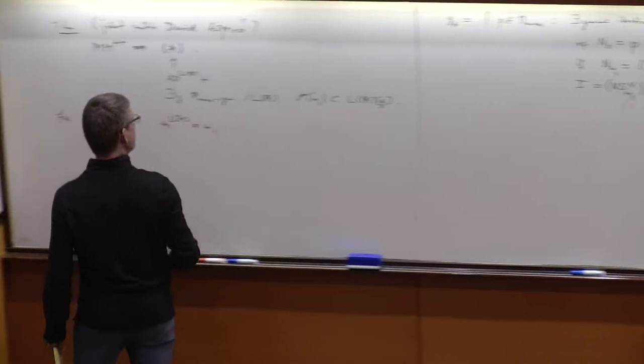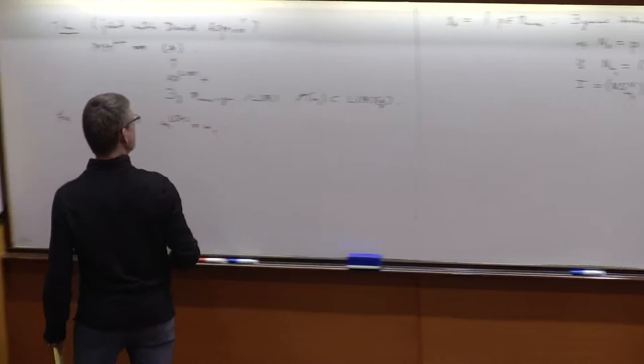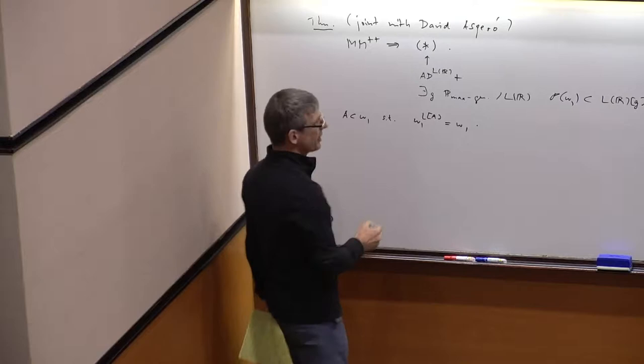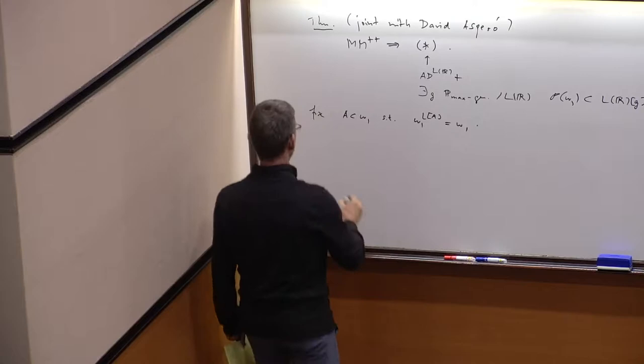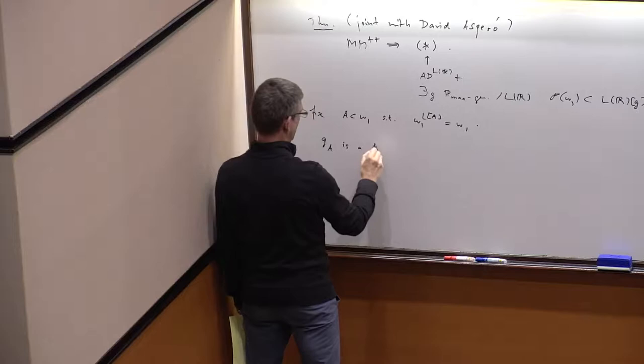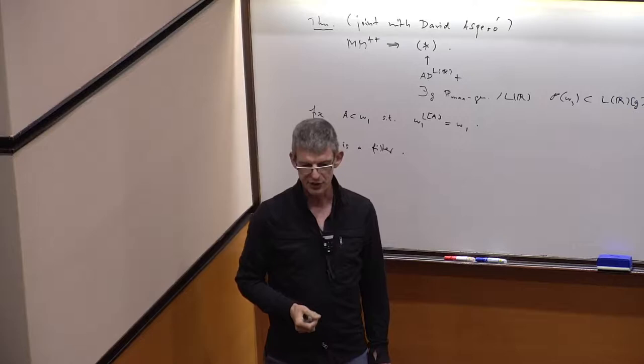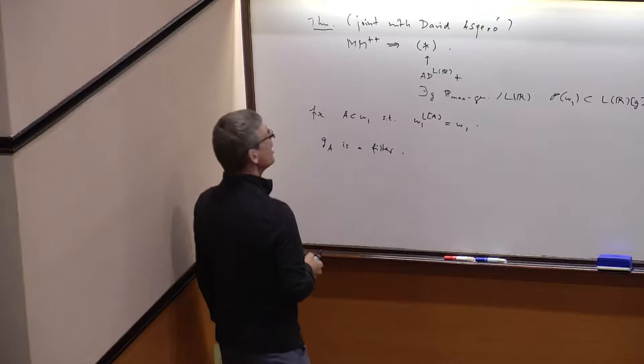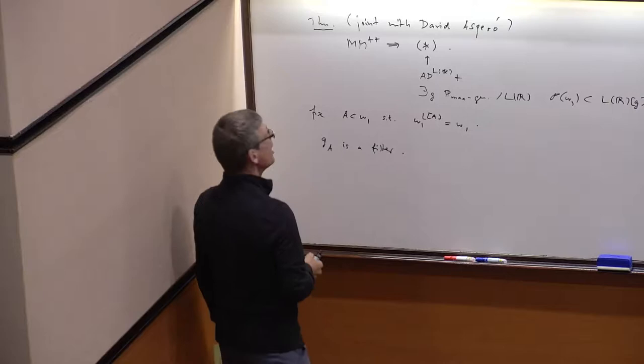What else is already known? This candidate has been around for a while. What is known is that under the right hypothesis, G_A is a filter. I don't think you can prove that in ZFC, but for instance if the non-stationary ideal is saturated and you have that P(ω₁)# exists, then that's a filter, and the argument can be read in Hsu's book.